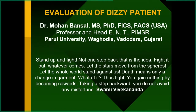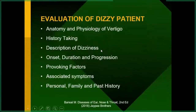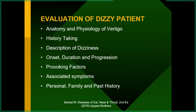This presentation will mainly talk about the history-taking part. Before going to history taking, we will discuss the basics of anatomy and physiology of vertigo, then different types of dizziness — vertigo, unsteadiness, lightheadedness — and then onset, duration, progression, provoking factors, associated symptoms, and personal, family, and past history. In the majority of cases, up to 90% of cases, you should be able to diagnose the cause of vertigo only with history taking, so it is of paramount importance and must be very systematic.